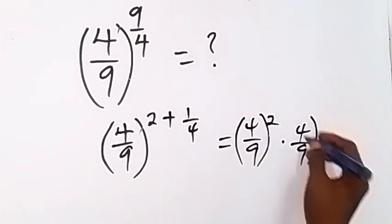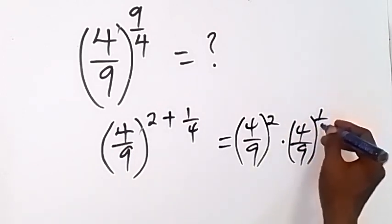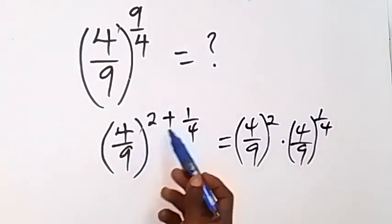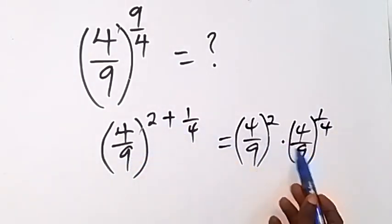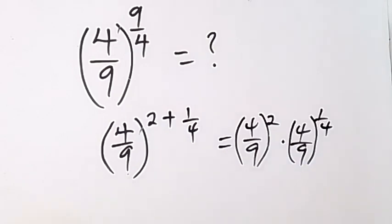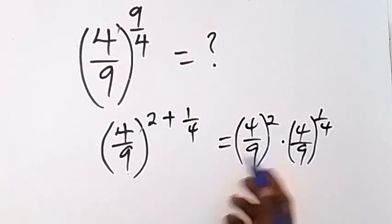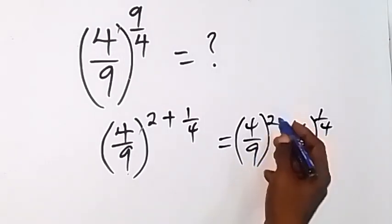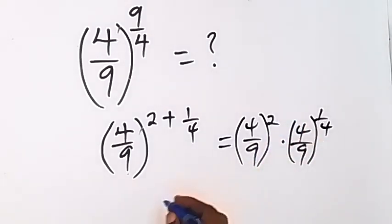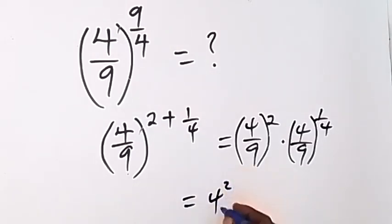We have the same base now. Then from there, here we know that 4/9 everything raised to power 2 means that we still have it as 4 raised to power 2 divided by 9 raised to power 2. So that's what we have there. So each of them is raising to the power of 2.